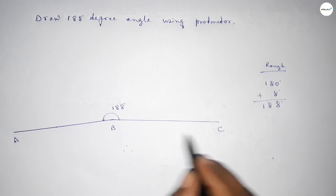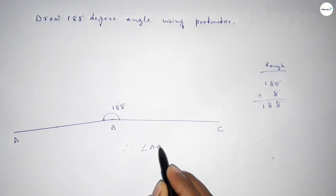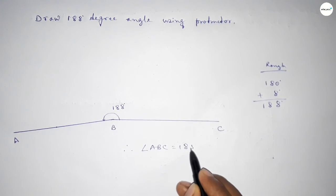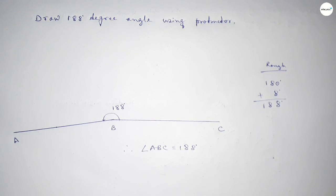So therefore angle ABC equal to 188 degree angle. That's all, thanks for watching. If this video is helpful to you, then please share it with your friend. Thanks for watching.